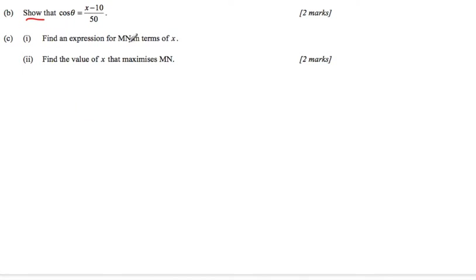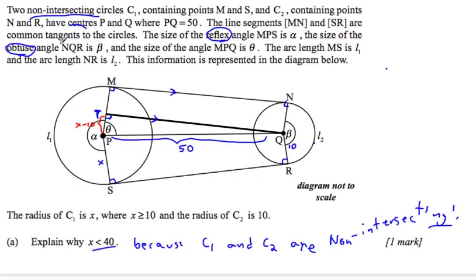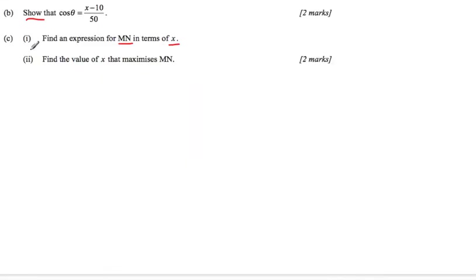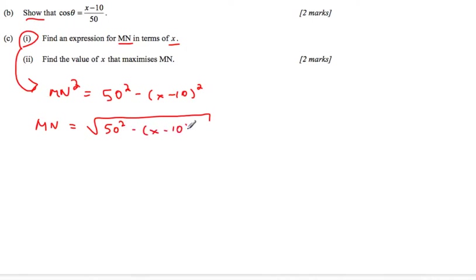Then we're going to find an expression for MN in terms of x. We want to find MN, which is the same as T to Q. If we have this length as the hypotenuse, it's a simple right angle triangle with x minus 10 as one of the shorter sides, and we want Q to T, which is the same as M to N. We just use Pythagoras. So MN squared is 50 squared minus (x minus 10) squared. So the length MN is the square root of 50 squared minus (x minus 10) squared.